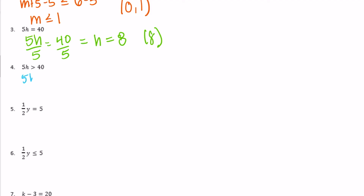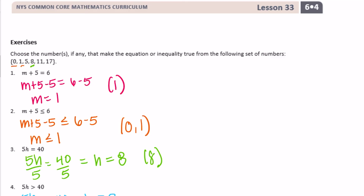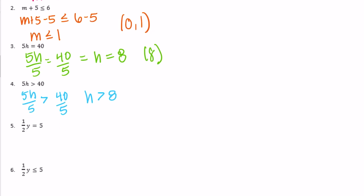Exercise 4: 5h is greater than 40. Dividing both sides by 5: h must be greater than 8. Picking out anything greater than 8 from our set gives us 11 and 17. Remember, we're not including 8 because it has to be strictly greater than — not greater than or equal to.